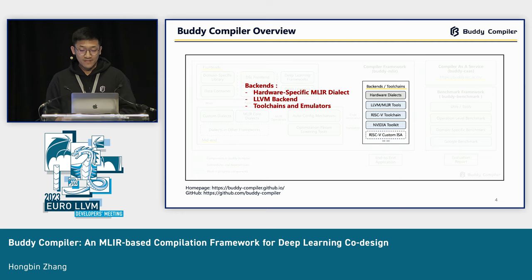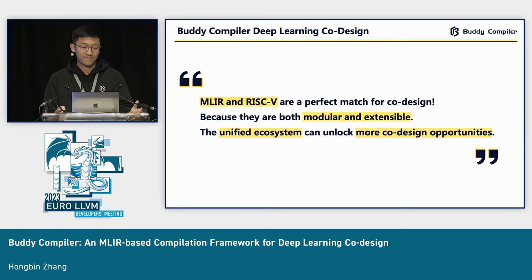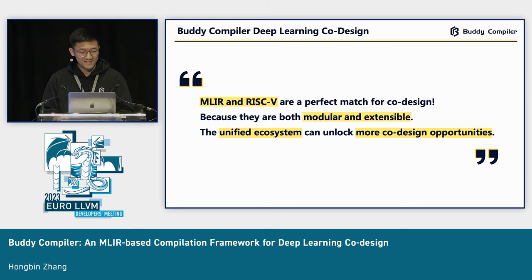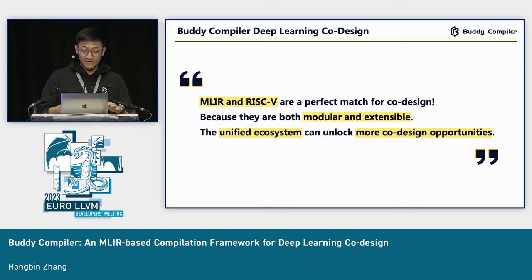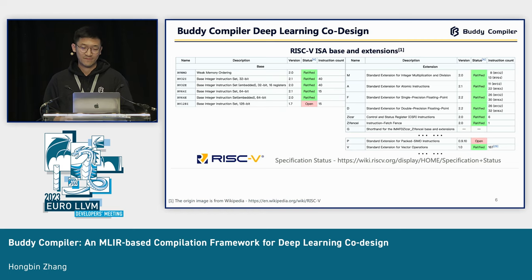You might ask: where does the co-design happen? In our opinion, MLIR and RISC-V are a perfect match for co-design because they both have modular and extensible features. Modularity is a very hot concept right now. We think MLIR and RISC-V can form a huge ecosystem for co-design, and this unified ecosystem can really unlock more co-design opportunities. People here may be more familiar with MLIR, but perhaps less familiar with RISC-V.